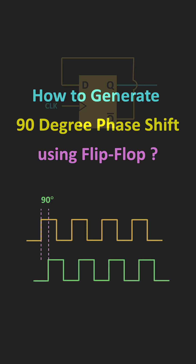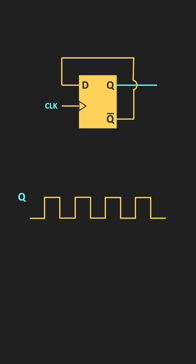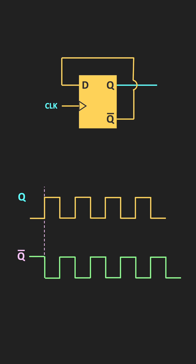As you know, if we connect the Q-bar output of the D flip-flop back to the input side and observe the output, then it is changing between 1 and 0 continuously at every clock pulse. This is how the output will look. And if we see the Q-bar output, then it is 180-degree phase shifted with respect to the Q output.